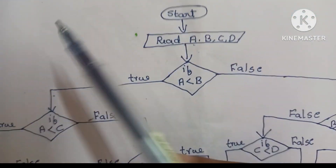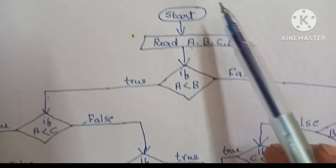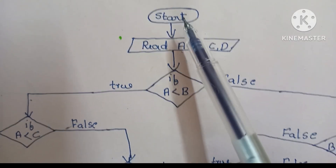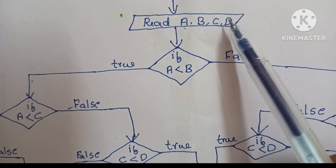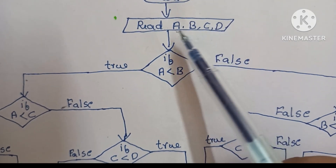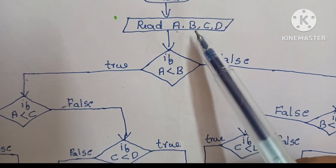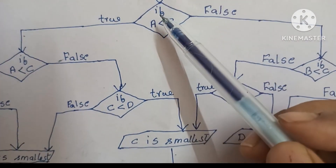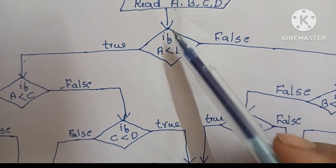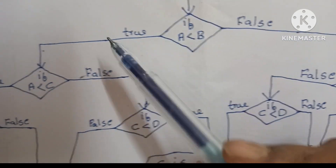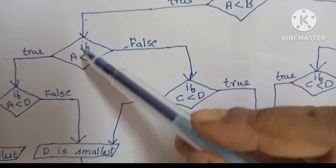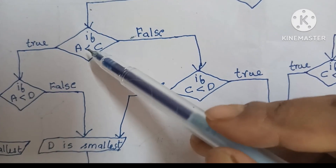To summarize: the flowchart to find the smallest among four numbers starts with a start statement in an oval. Next we read input values in a parallelogram — Read A, B, C, D. We begin comparisons: first compare A with B. If A less than B is true, A is smallest so far, then compare A with C. If A less than C is true, continue.